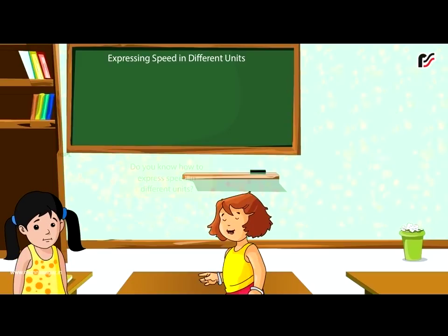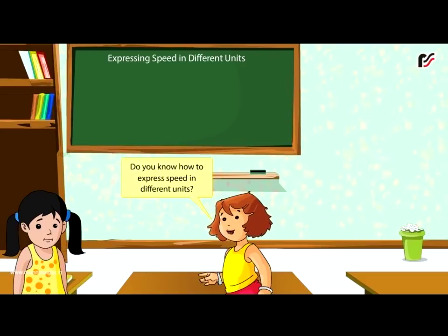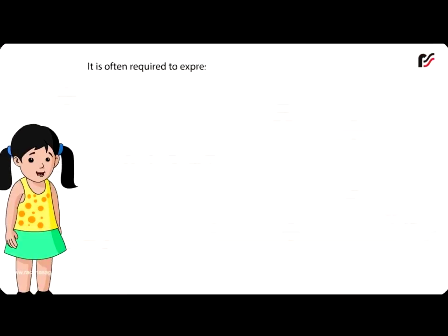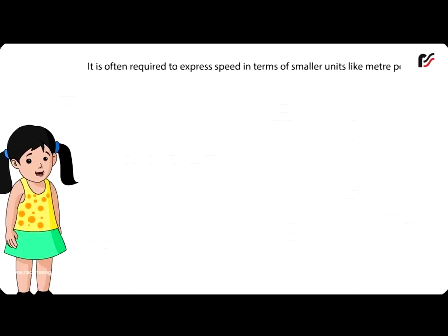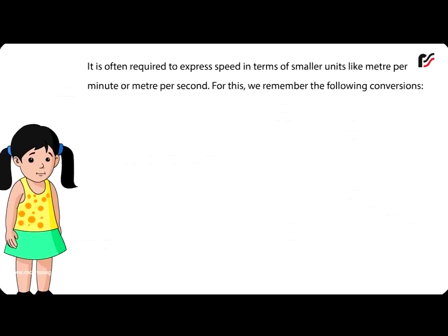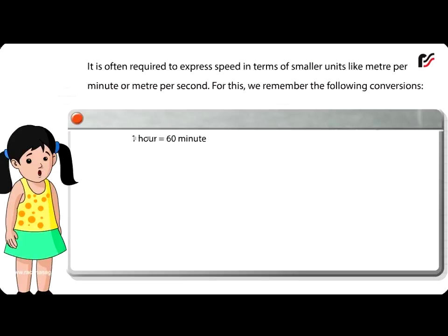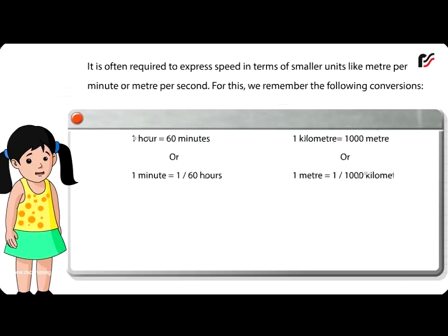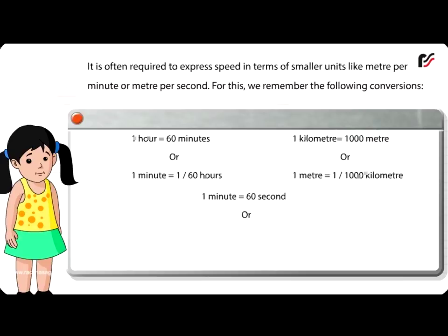Expressing Speed in Different Units: It is often required to express speed in terms of smaller units like metre per minute or metre per second. For this we remember the following conversions: 1 hour equals 60 minutes, or 1 minute equals 1/60 hours. 1 kilometre equals 1000 metres, or 1 metre equals 1/1000 kilometre. 1 minute equals 60 seconds, or 1 second equals 1/60 minute.